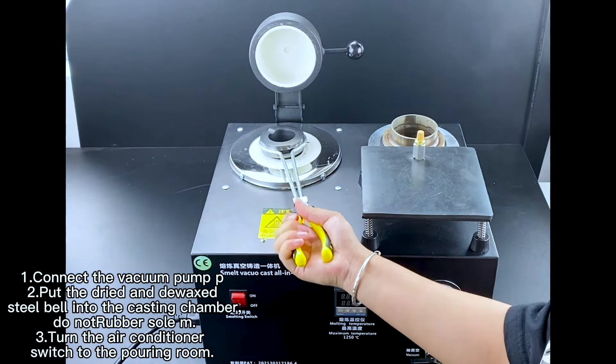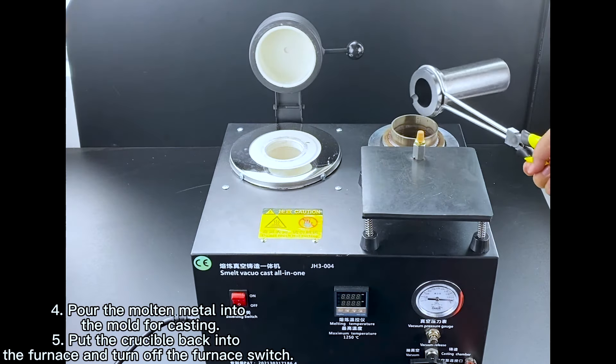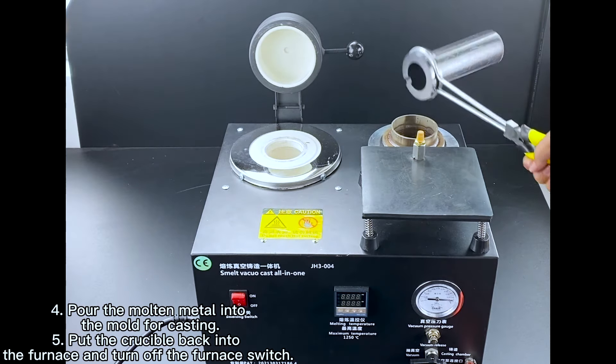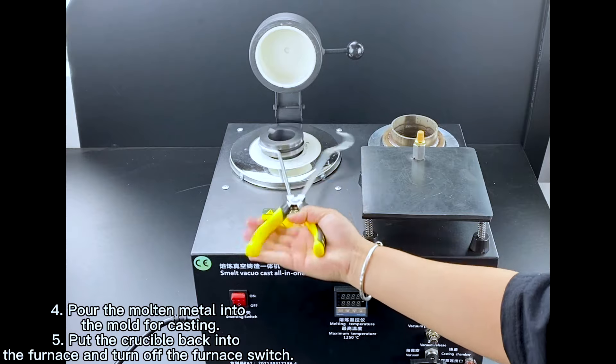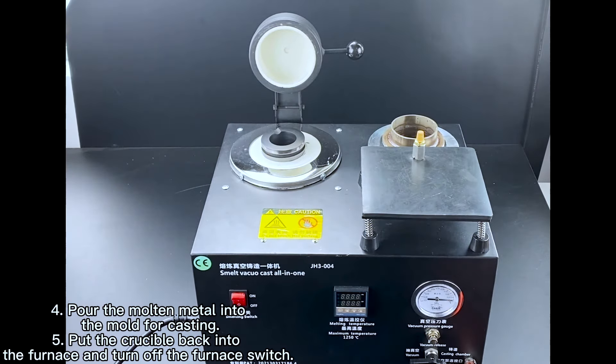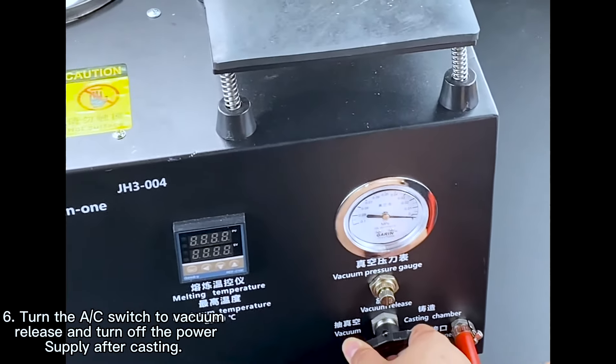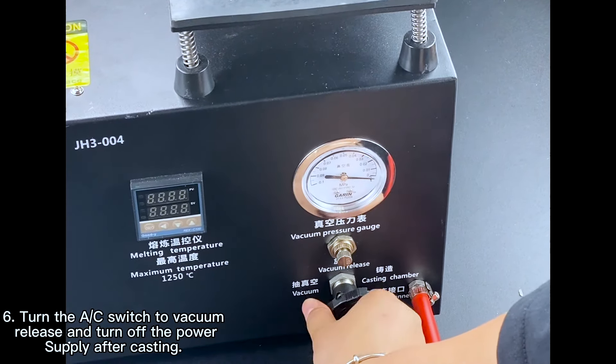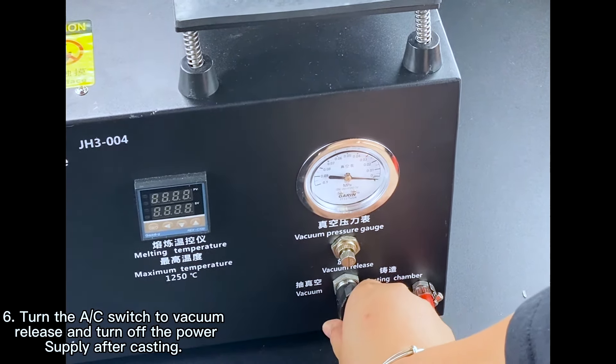4. Pour the molten metal into the mold for casting. 5. Put the crucible back into the furnace and turn off the furnace switch. 6. Turn the air switch to vacuum release and turn off the power supply after casting.